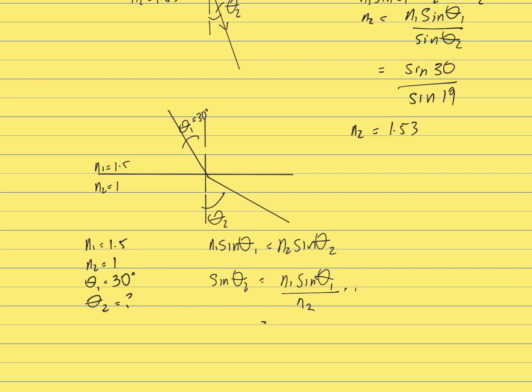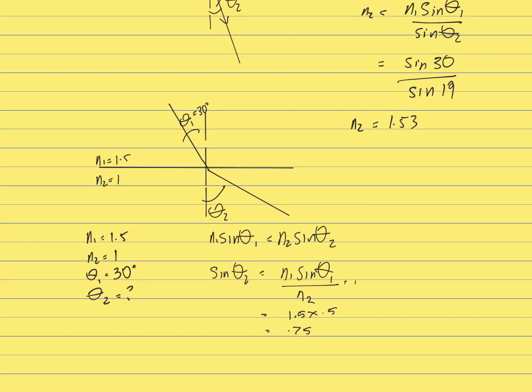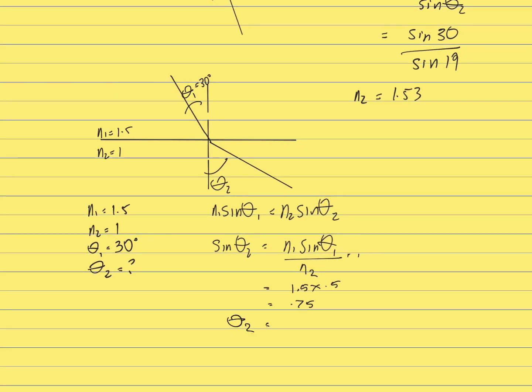So let's say it was 1.5, and the sine of 30 is actually 0.5 divided by N2, which is 1. So we don't have to say that. We can just say it's 0.75. Now, so what we're trying to do is work out the inverse sine of 0.75.